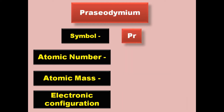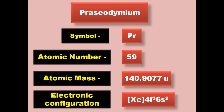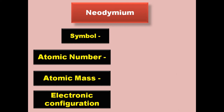Praseodymium has symbol Pr, atomic number 59, atomic mass 140.9077, electronic configuration [Xe] 4f3 6s2. Praseodymium is a lanthanide and exists in solid form at room temperature.